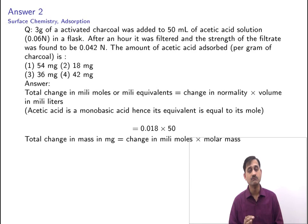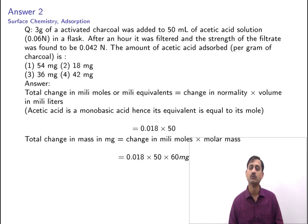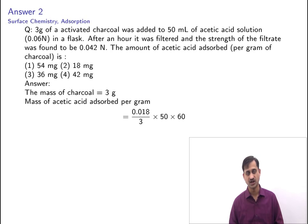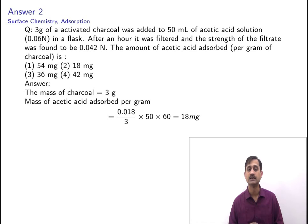The total change in mass in milligrams = change in millimoles × molar mass = 0.018 × 50 × 60 mg, where 60 is the molar mass of acetic acid. The mass of charcoal given is 3 grams. So the mass of acetic acid adsorbed per gram of activated charcoal = (0.018 × 50 × 60) / 3 = 18 milligrams.